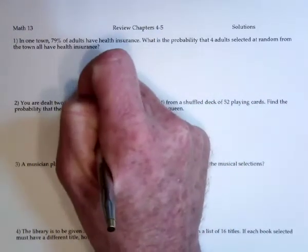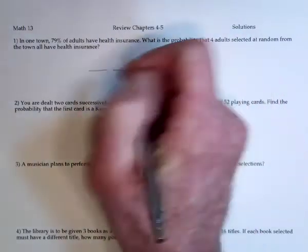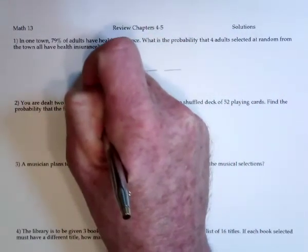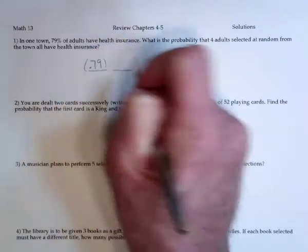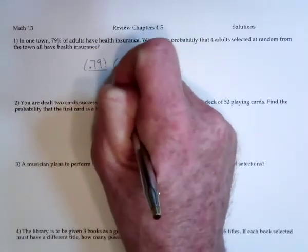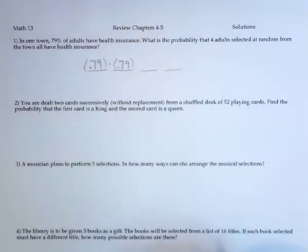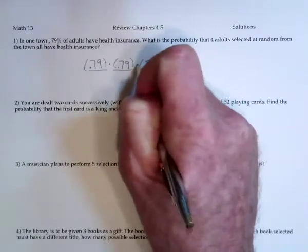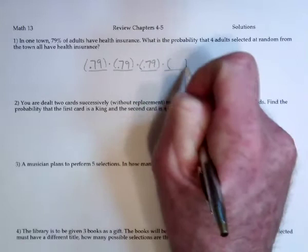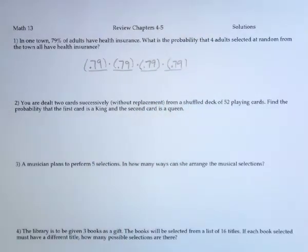One way to do it is say, well, here's the four people: one, two, three, four. The chances that this one has health insurance is 0.79, and this one needs to have health insurance, so that's 0.79. And since it's 'and', we multiply. Then just do that for all four people and multiply 0.79 four times.